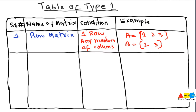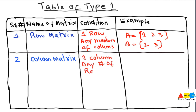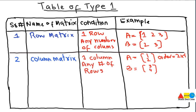The next type is the column matrix. As its name indicates, the condition is that it must have exactly 1 column, and any number of rows. For example, a matrix of order 2×1 (2 rows and 1 column) is a column matrix. Another example with 2 rows and 1 column also has order 2×1. Such matrices are called column matrices.